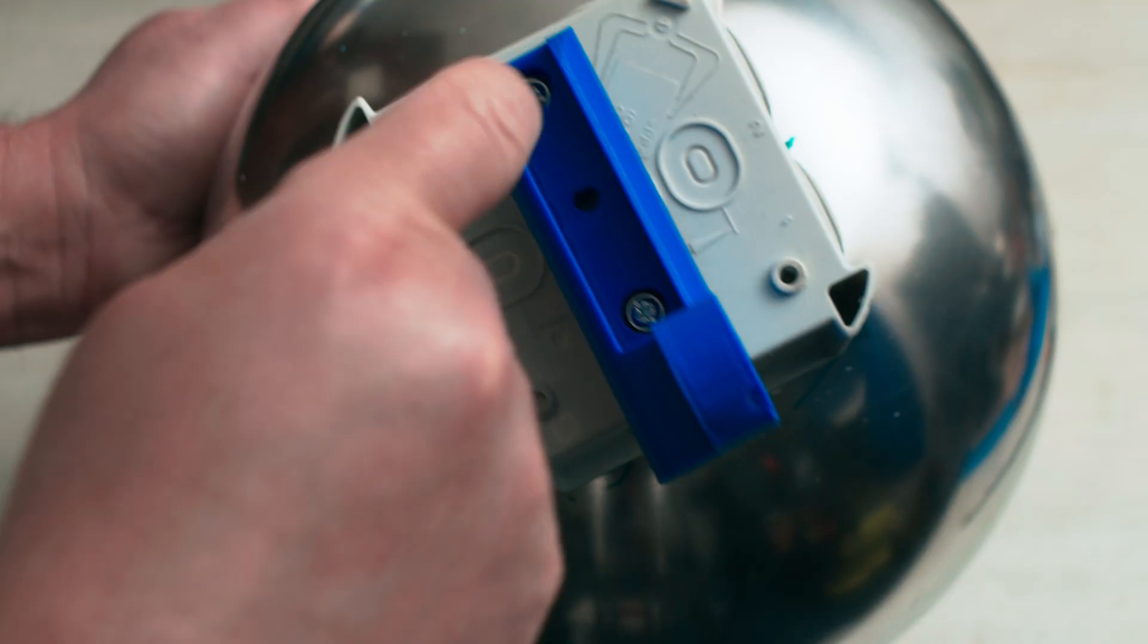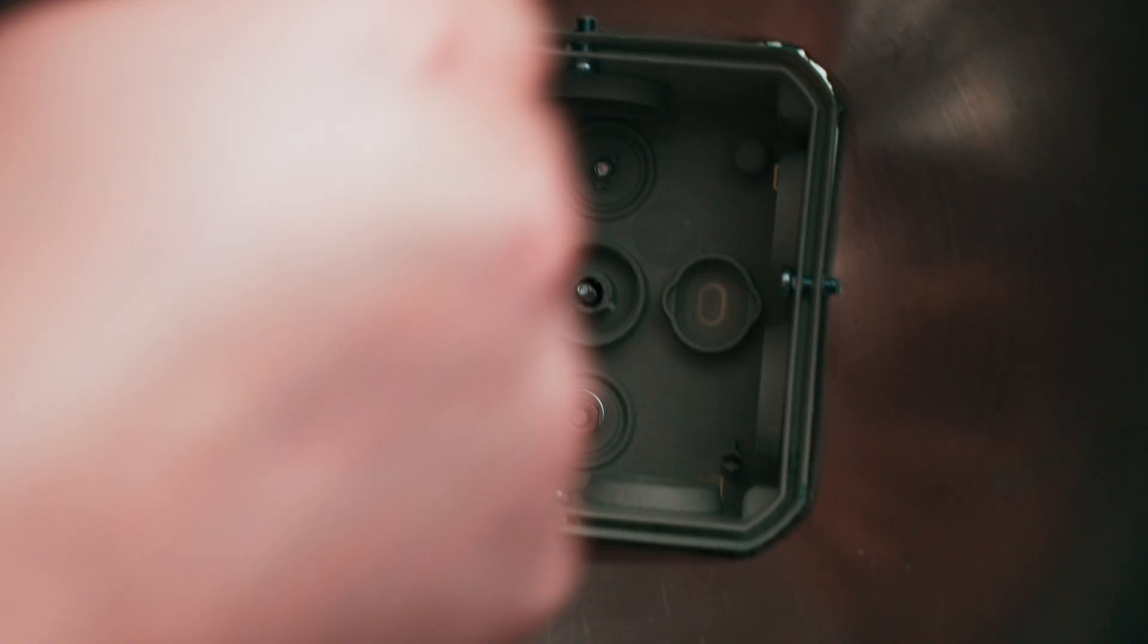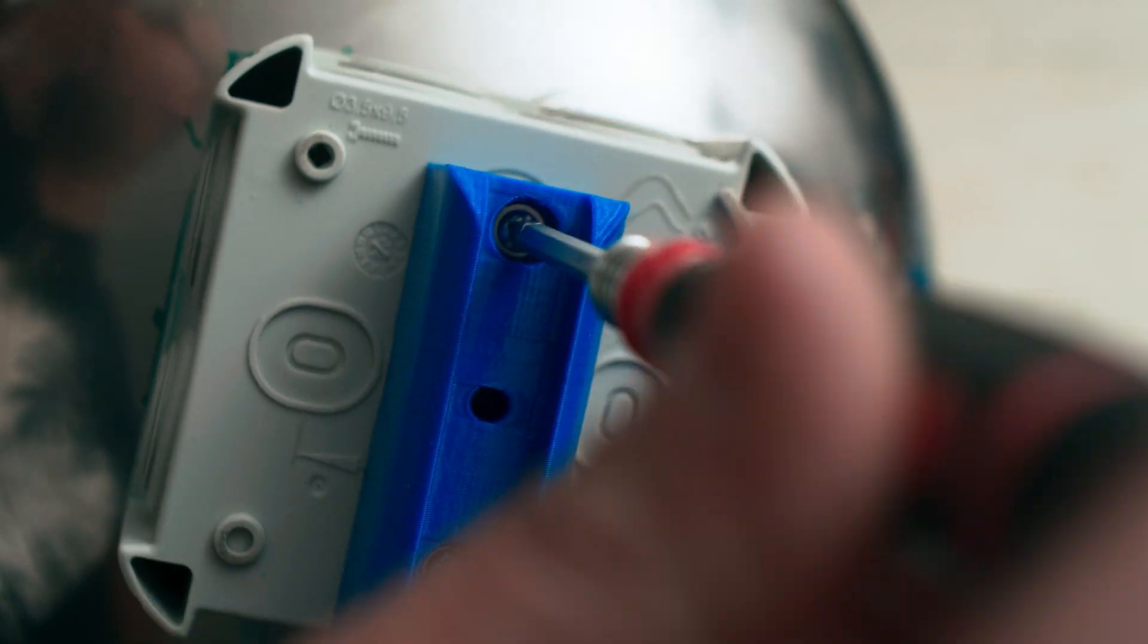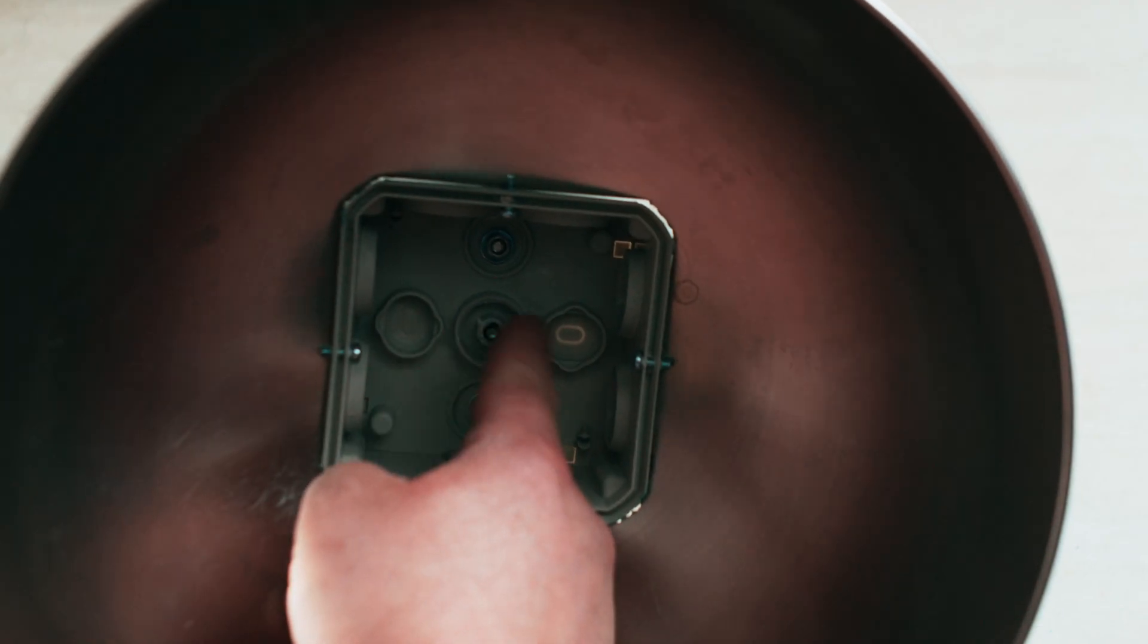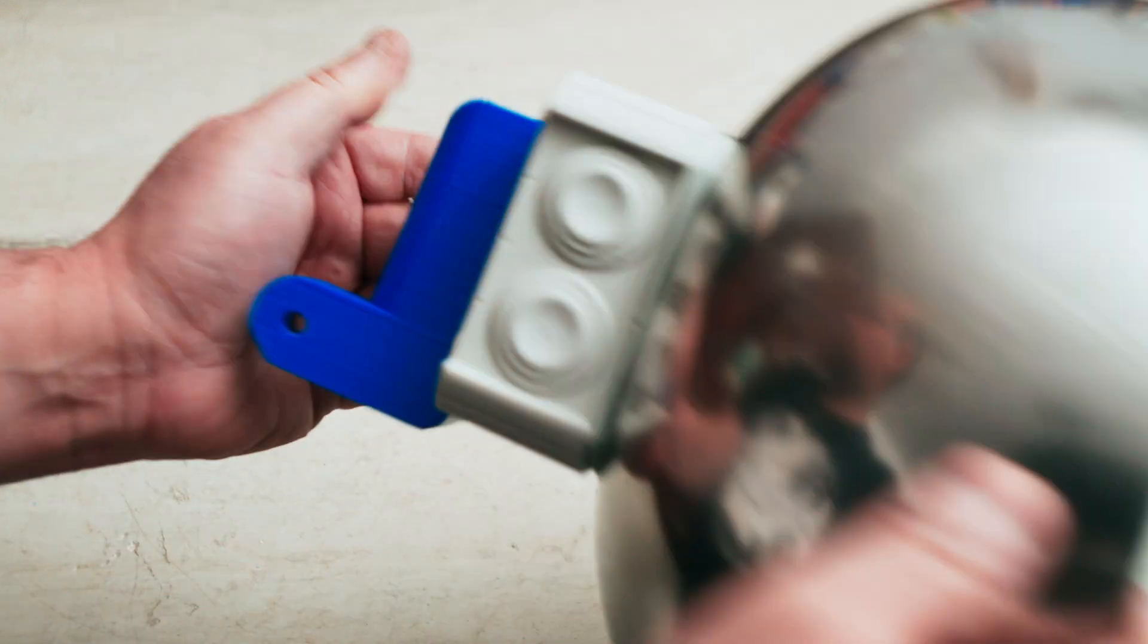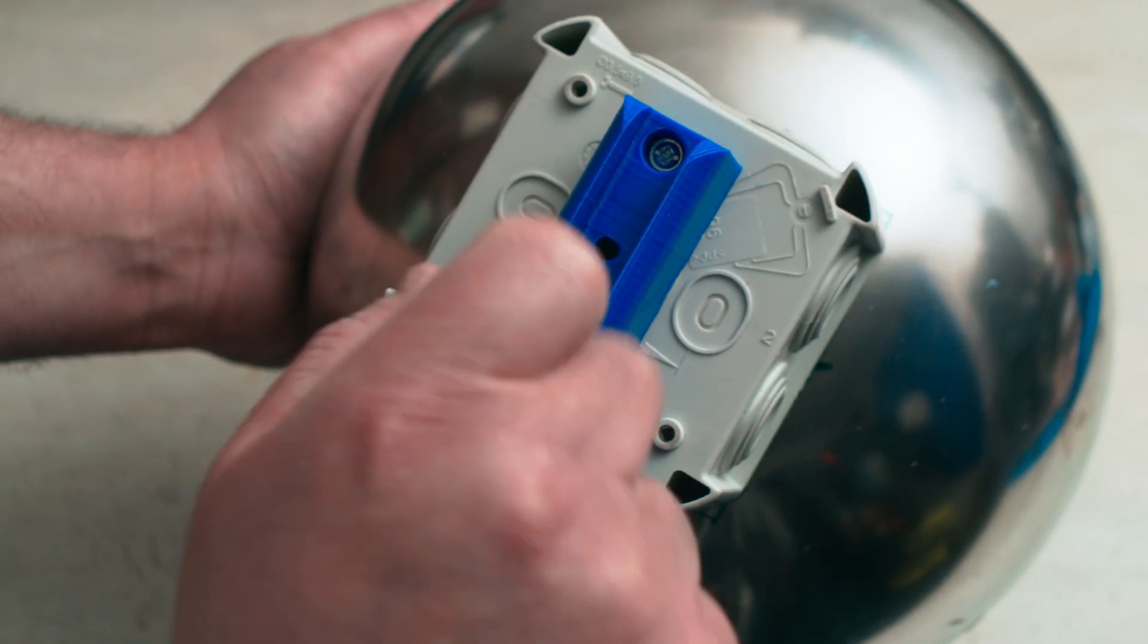You can also choose other mounting options. Now, attach the 3D printed adjustable arm mount using two M4 screws. Notice the M3 screw is free inside the hole. When we attach the socket assembly, we will tighten it using this hole in the mount.